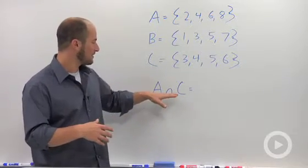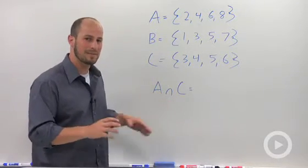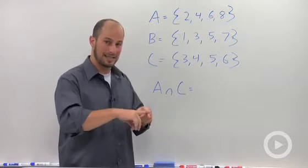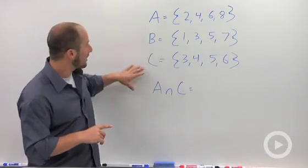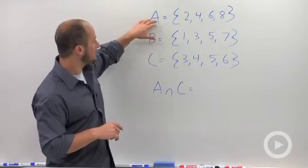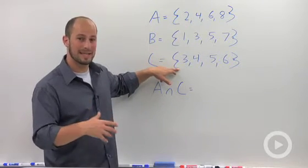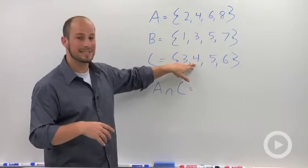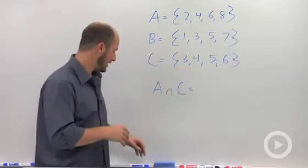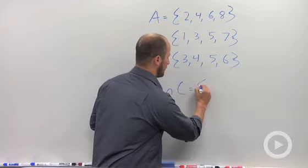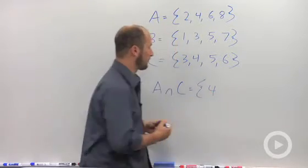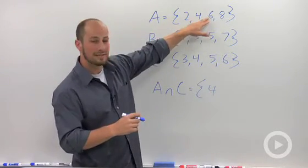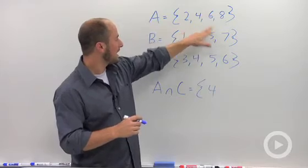If you look at it, A has a number 2, but C doesn't, so therefore it's not in the intersection. A has a number 4, 4 is in C, so therefore that is in the intersection, so we can include 4. Going down the row, 6 is in A, 6 is in C, so that is in the intersection as well.